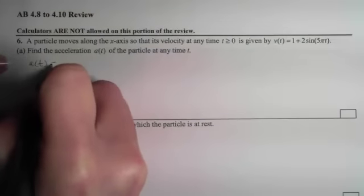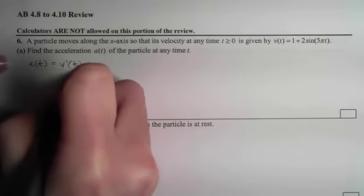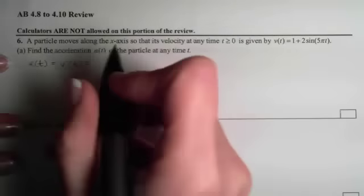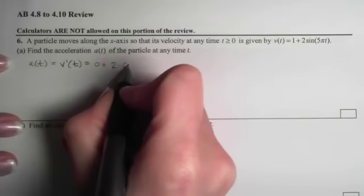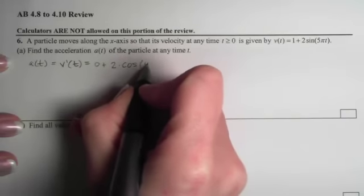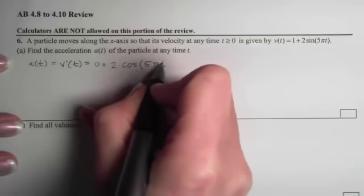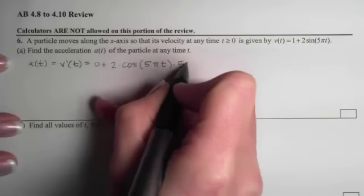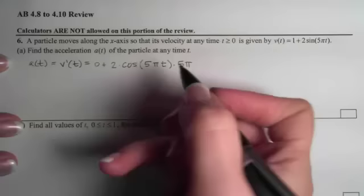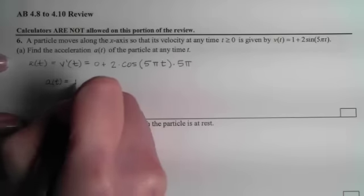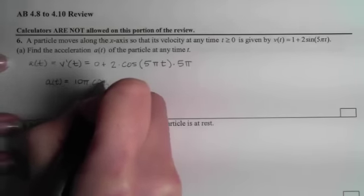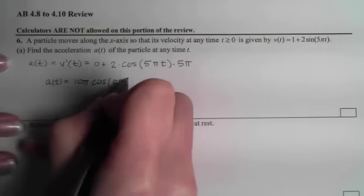The acceleration will be the derivative of that velocity, which will be zero plus, move through the two, hit the sine, derivative of sine is cosine of the inside unchanged times the derivative of the inside. You could leave it like this or simplify it and get 10π times cosine of 5πt.